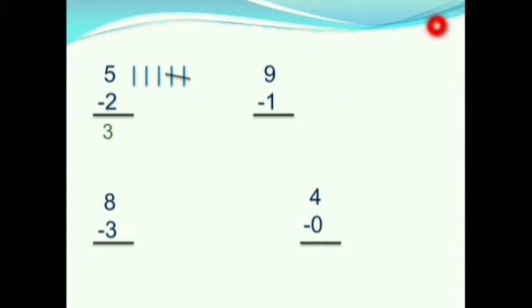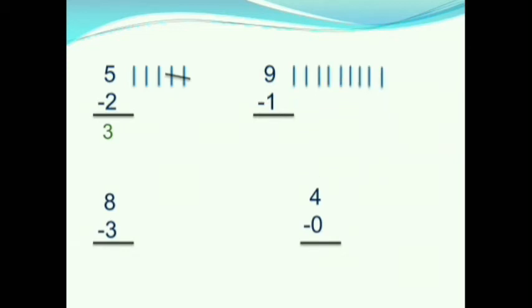Children, in the next question we have 9 minus 1. What is 9 minus 1? Let us find out. Here we have first 9, so we will draw 9 lines. Next we have 1, so we will cut 1 line. How many lines are remaining? 1, 2, 3, 4, 5, 6, 7, 8. 8 lines are remaining. So, 9 minus 1 is equals to 8.